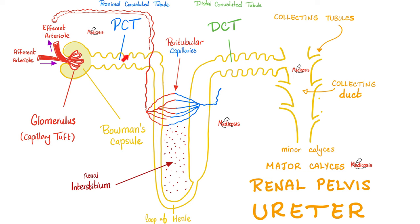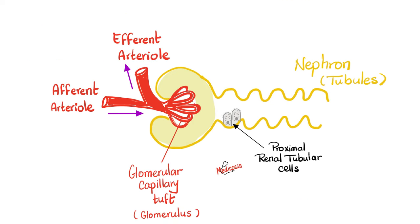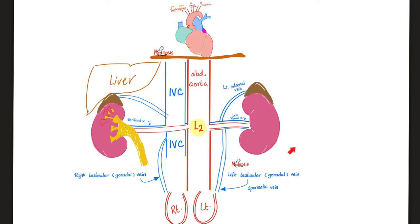Do you remember the structure of the kidney? The proximal convoluted tubule has a lumen lined by epithelium — any cavity in your body is lined by epithelium. This epithelium is probably the origin of the renal cell carcinoma: tubular epithelial cells in the proximal convoluted tubule.